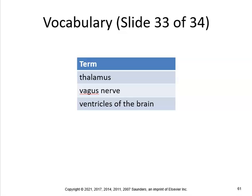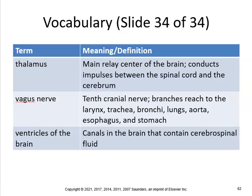Thalamus, vagus nerve, and ventricles. Thalamus is air traffic control — the main relay center of the brain that conducts impulses between the spinal cord and the cerebrum. The vagus nerve is the 10th cranial nerve, and it branches to reach the larynx, trachea, bronchi, lungs, aorta, esophagus, and stomach. The ventricles of the brain are canals that contain cerebral spinal fluid.